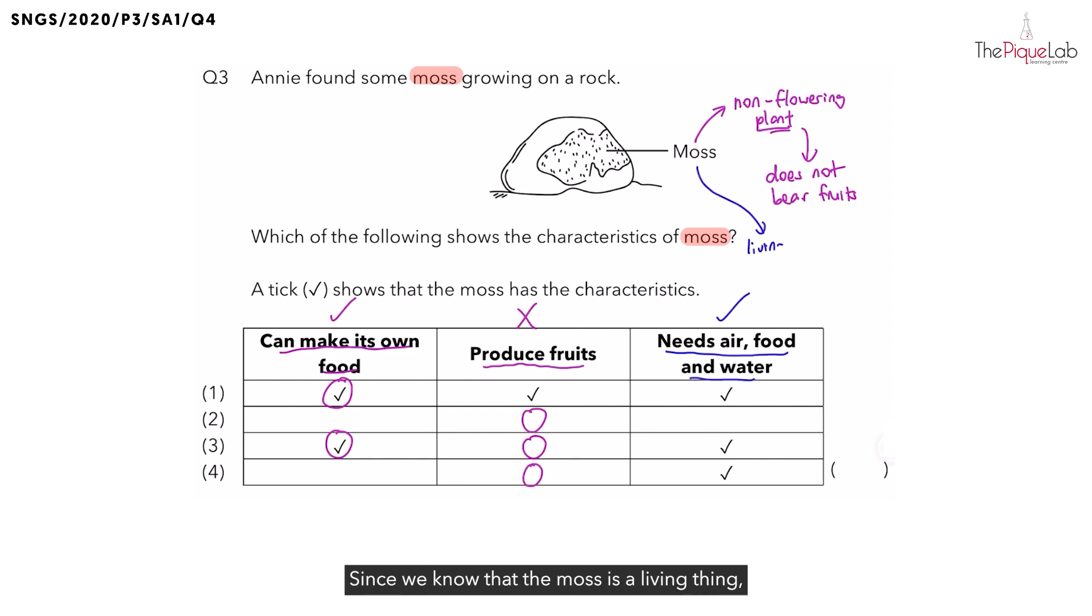Since we know that the moss is a living thing, do living things need air, food, and water to survive? Yes. So, we shall look for the options with a tick. Which options are they? It has to be options 1, 3, and 4.